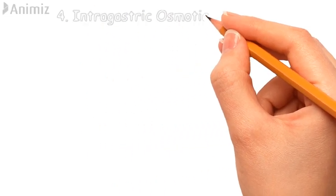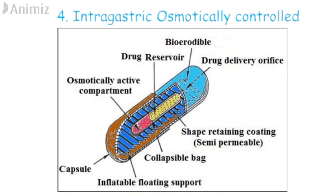The intragastric osmotically controlled system consists of an inflatable floating support containing a liquid that gasifies at body temperature — usually ether — a semi-permeable coating consisting of an osmotically active agent, a drug reservoir, and a delivery orifice at one end. Upon administration, the liquid volatilizes and the system floats on the gastric content. Water gets absorbed through the semi-permeable membrane into the osmotic compartment, which develops osmotic pressure and forces the drug out of the reservoir through the delivery orifice.